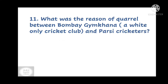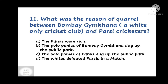Question number 11. What was the reason for the quarrel between Bombay Gymkhana, a white-only cricket club, and Parsi cricketers? Options are: A. The Parsis were rich, B. The polo ponies of Bombay Gymkhana dug up the public park, C. The polo ponies of Parsis dug up the public park, or D. The whites defeated Parsis in a match.